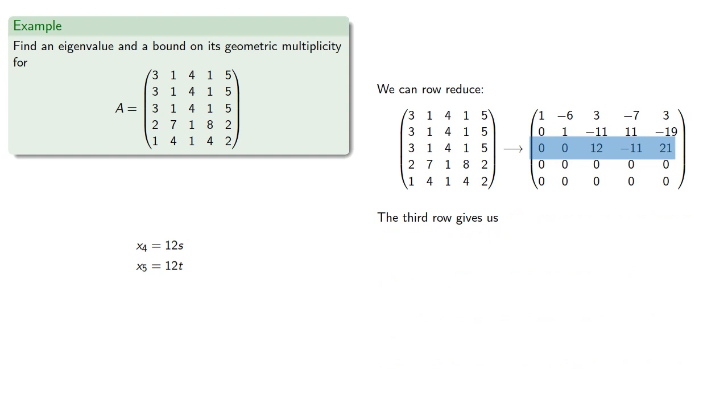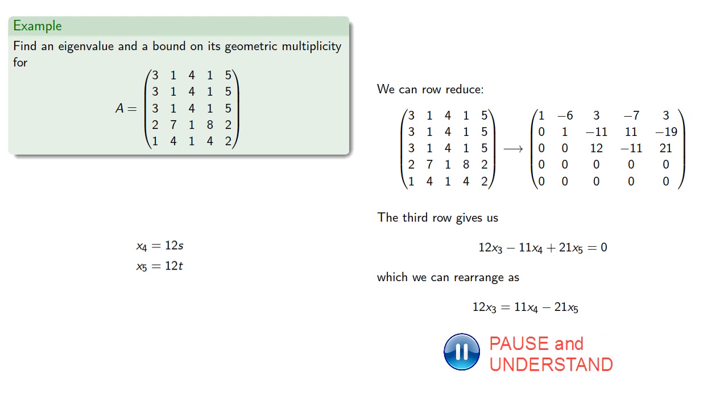Now our third row gives us the equation, which we can rearrange. And since we have expressions for x4 and x5, we can solve for x3.